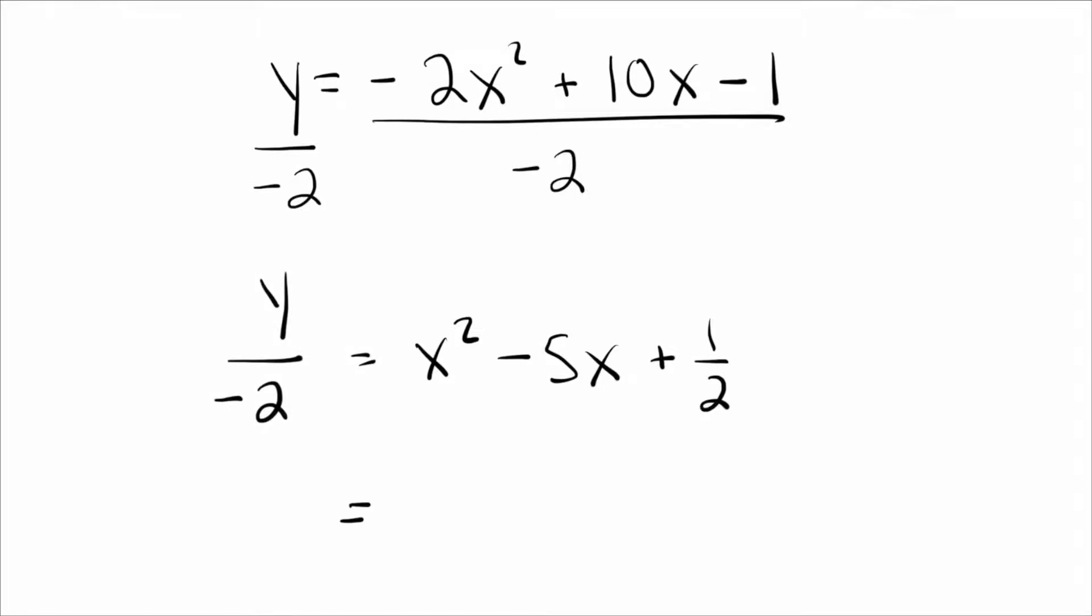Just complete the square on the right. So if we did that, I would take half of 5, which is 5 halves. Here, I keep my 1 half, and I subtract my new negative 5 halves squared. Again, if that's not something you feel so comfortable with, check out my video on completing the square. I'll show you exactly how to deal with that.